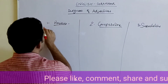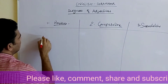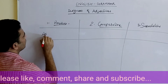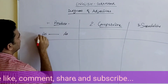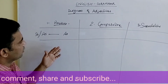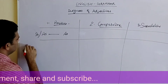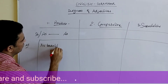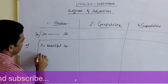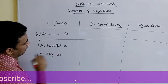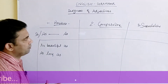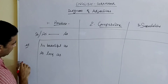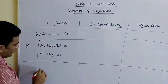Let me tell you about these. The first is the positive degree, and how it comes — it uses 'as...as' or sometimes 'so...as'. For example: 'as beautiful as', 'as long as'. These examples come in the category of positive degree, which tells about the quality of one person.